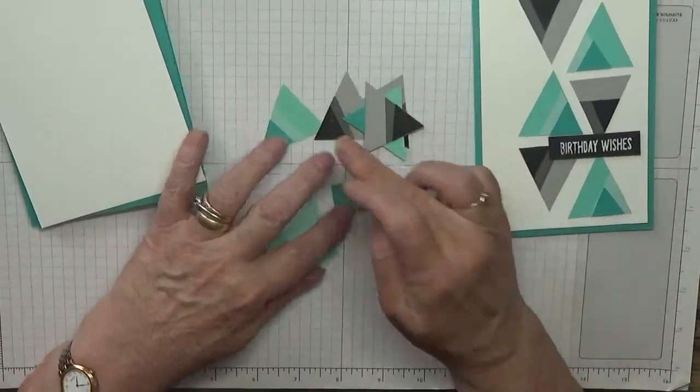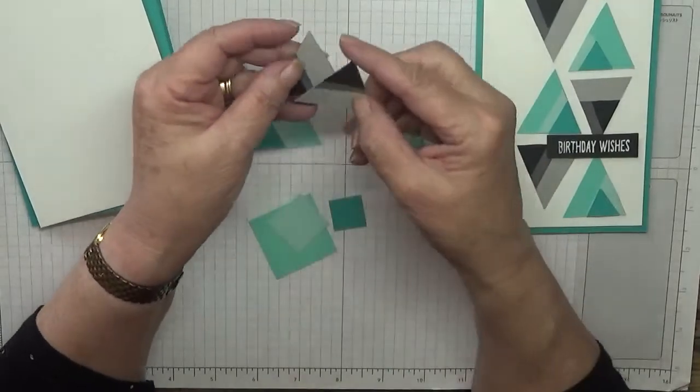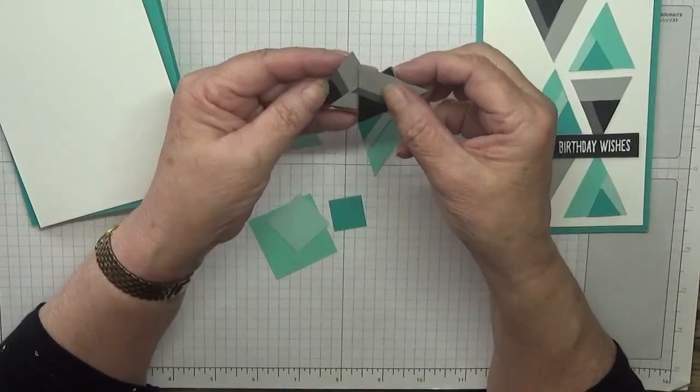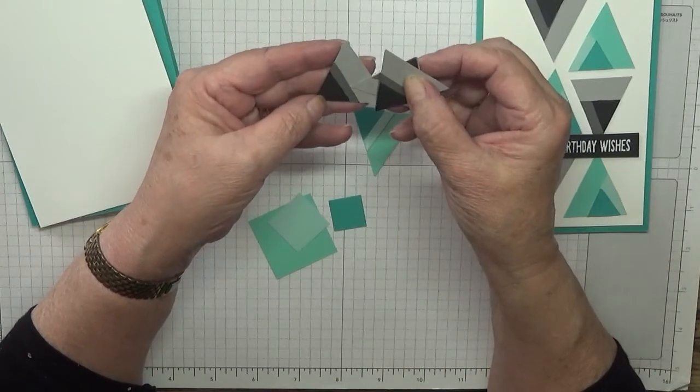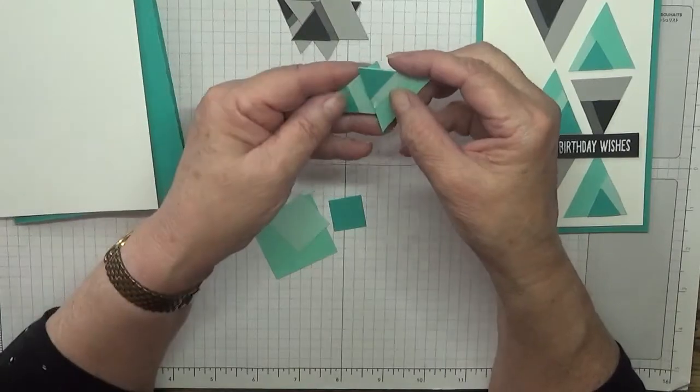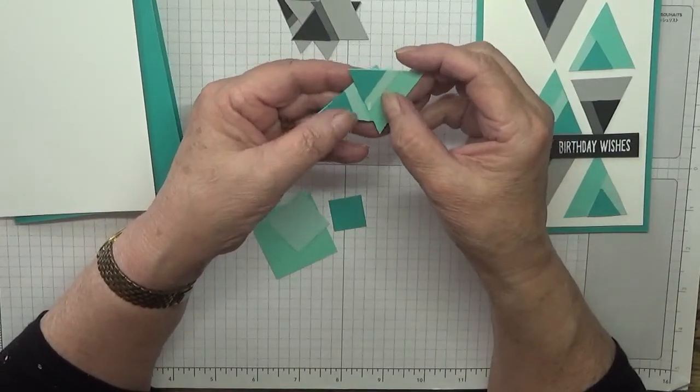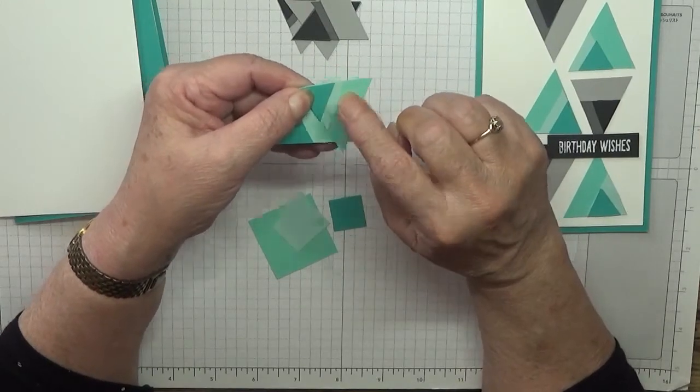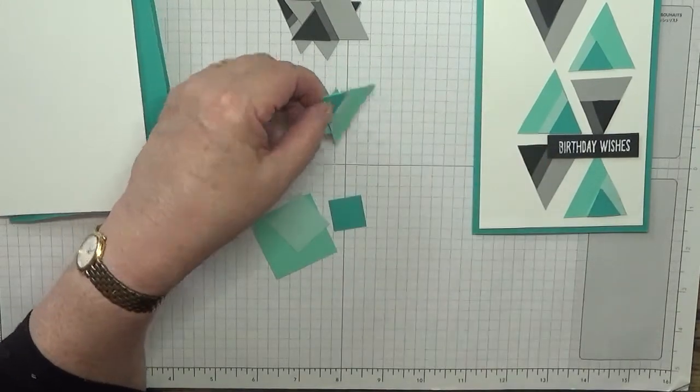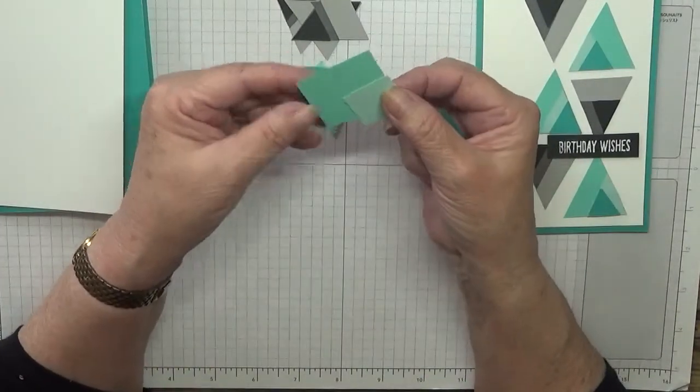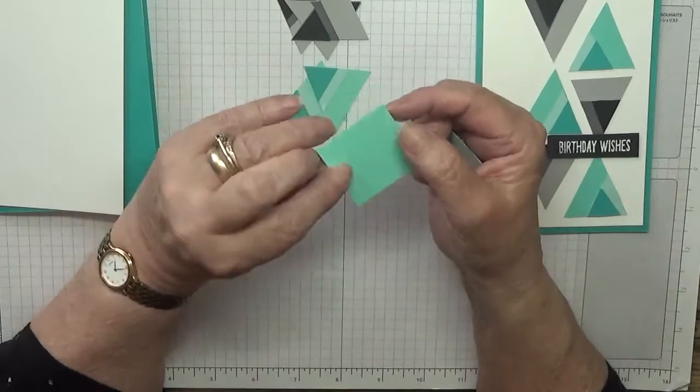I have got some triangles. Now I've made one color is smoky slate, basic gray and basic black, and the other color is pool party which is there, Coaster Cabana and Bermuda Bay.